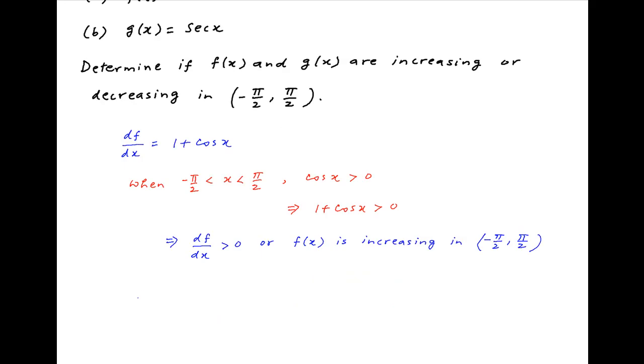g(x) is equal to sec x, therefore dg/dx is equal to sec x times tan x, which can be written as sin x upon cos²x.